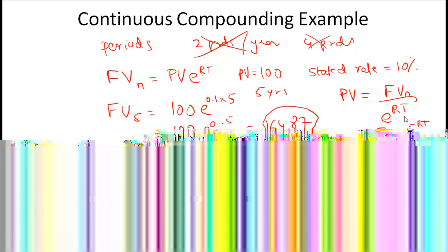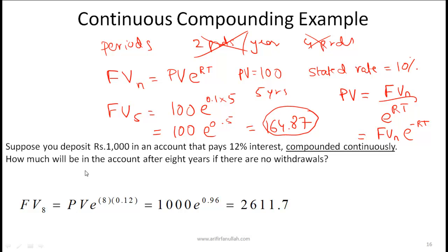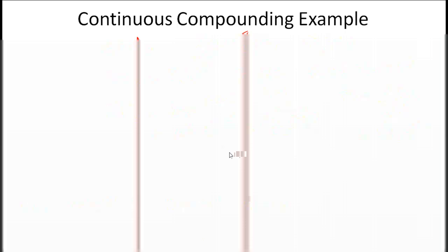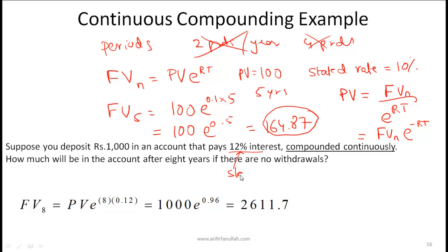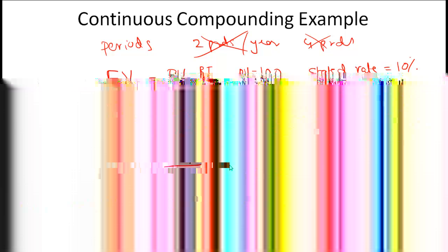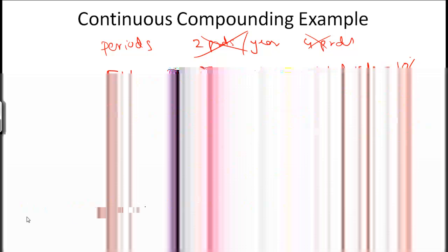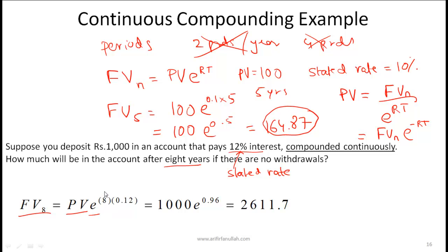The derivation is complex and the CFA Institute does not require you to know it. Suppose you deposit 1000 rupees in an account that pays 12% interest compounded continuously — this 12% is sometimes referred to as the stated rate. How much will be in the account after eight years if there are no withdrawals? The future value equals 1000 times e to the power of 0.96, which is 2611.7.